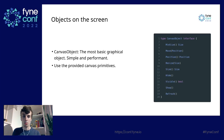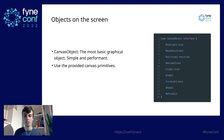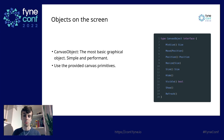The canvas object is an interface which provides a MinSize function that returns the minimum size the object can shrink to, a method to move it, a method to get the position, a method to resize it, a method to get its size, methods to hide and show it, to know if it's visible or not, as well as a Refresh method to update its contents on the screen.